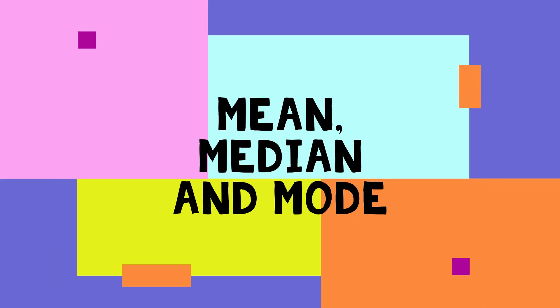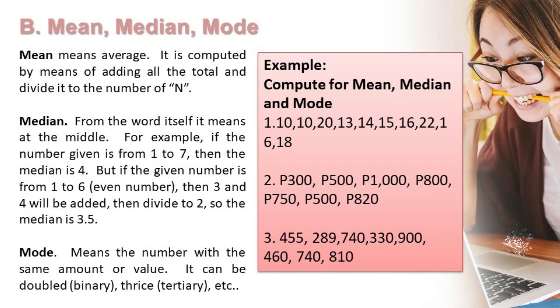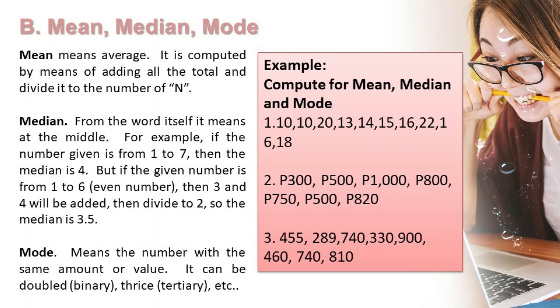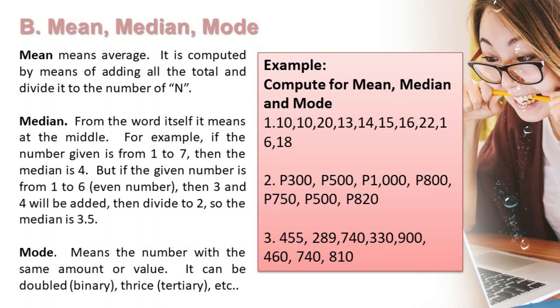Mean means average. It is computed by adding all the values and dividing by the number of n. For example, 1, 2, 3 — that's 6. 6 divided by 3, so the average is 2.